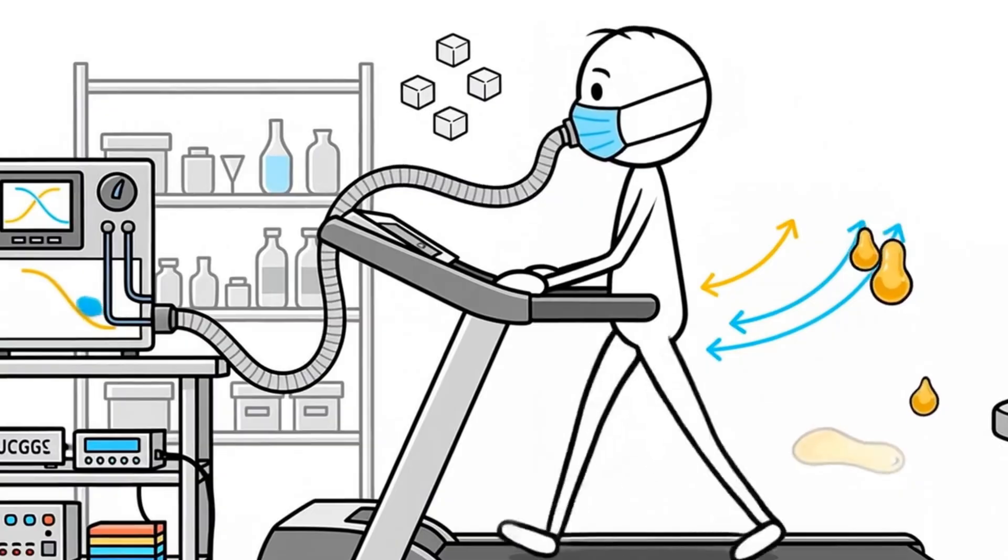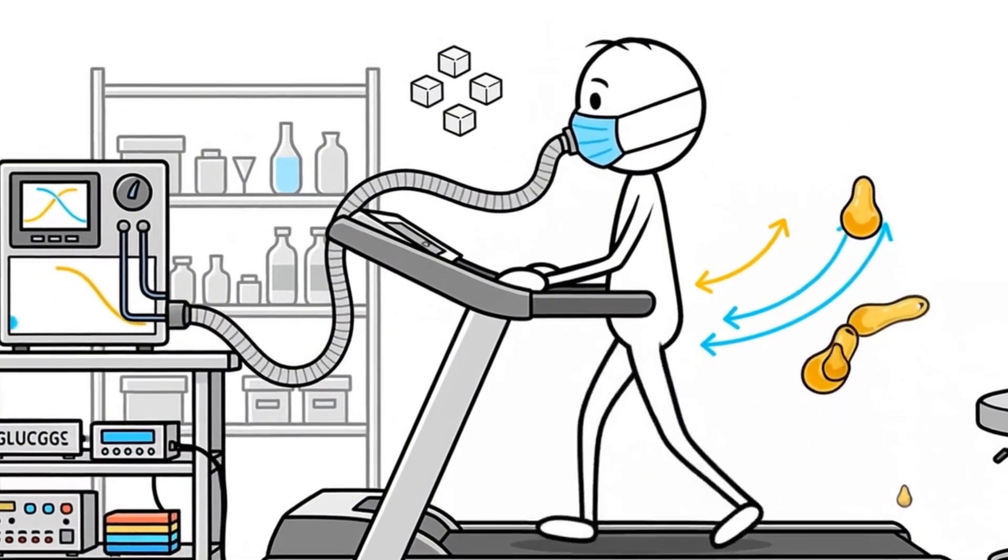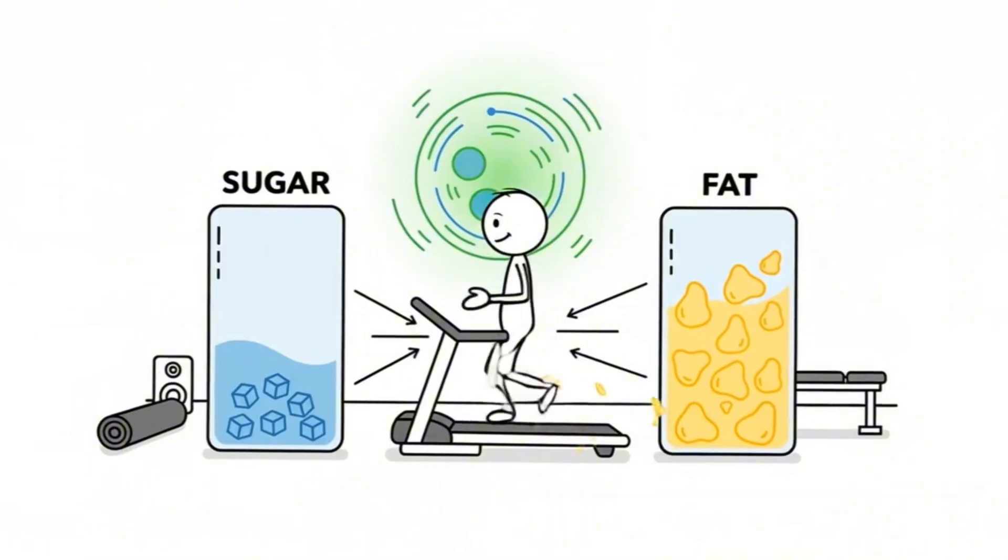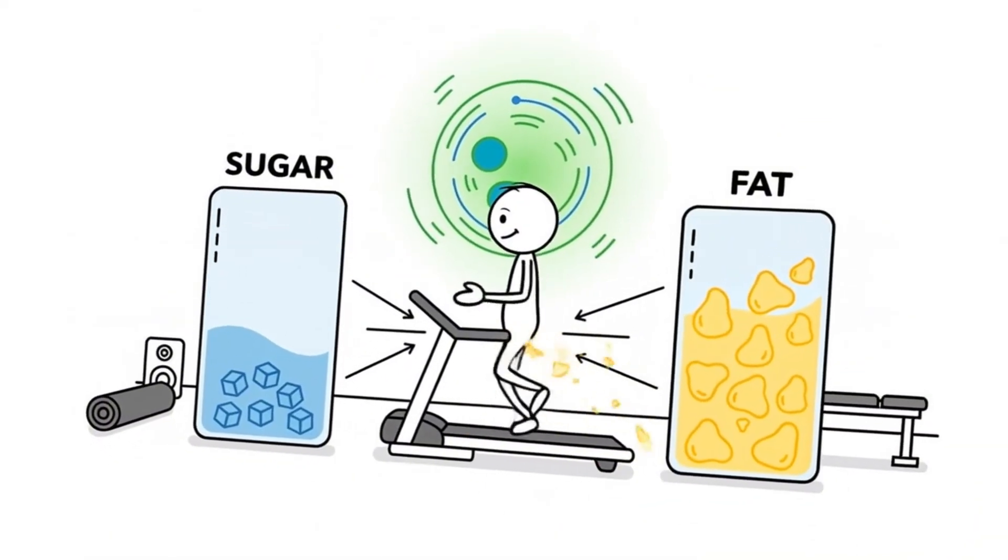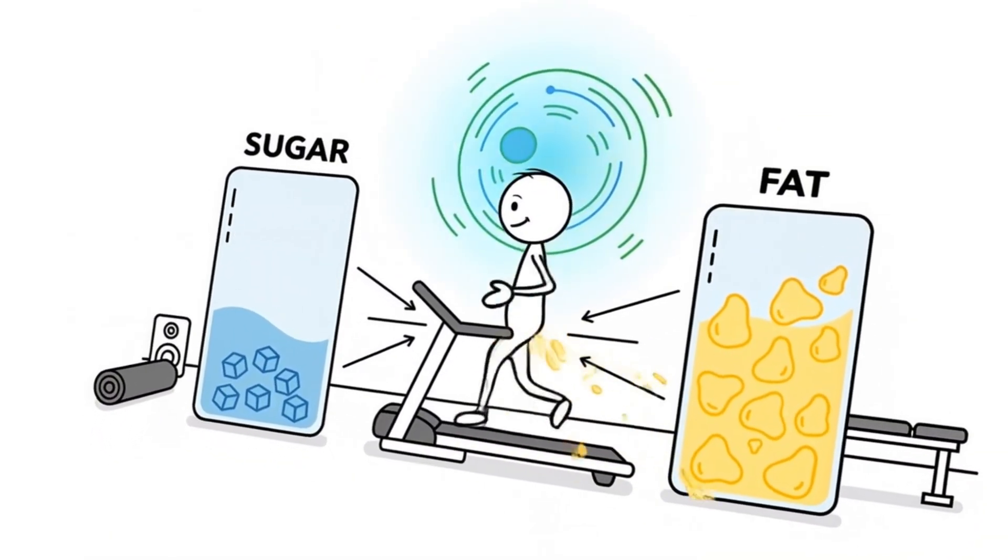This switch is measurable in labs through respiratory exchange ratios, and it's one of the clearest signs of efficient fat metabolism. You're essentially teaching your body to prefer fat as fuel.